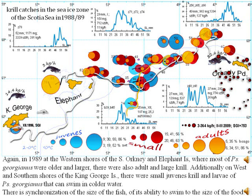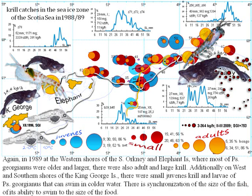In 1989 at the western shores of South Orkney and Elephant Island, where most Georgianus were older and larger, there were also adult and large krill. Additionally, on western southern shores of King George Island, there were small juvenile krill and larvae of Georgianus that can swim in colder water. There is a synchronization of fish size and its ability to swim with the size of available food.